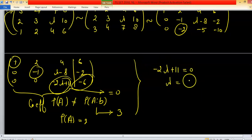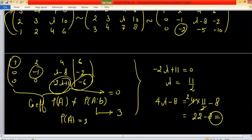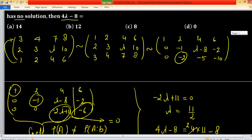We have to find the value of 4lambda - 8. This equals 4 times 11/2 minus 8. The 4 cancels with 2, giving us 22 - 8 = 14.